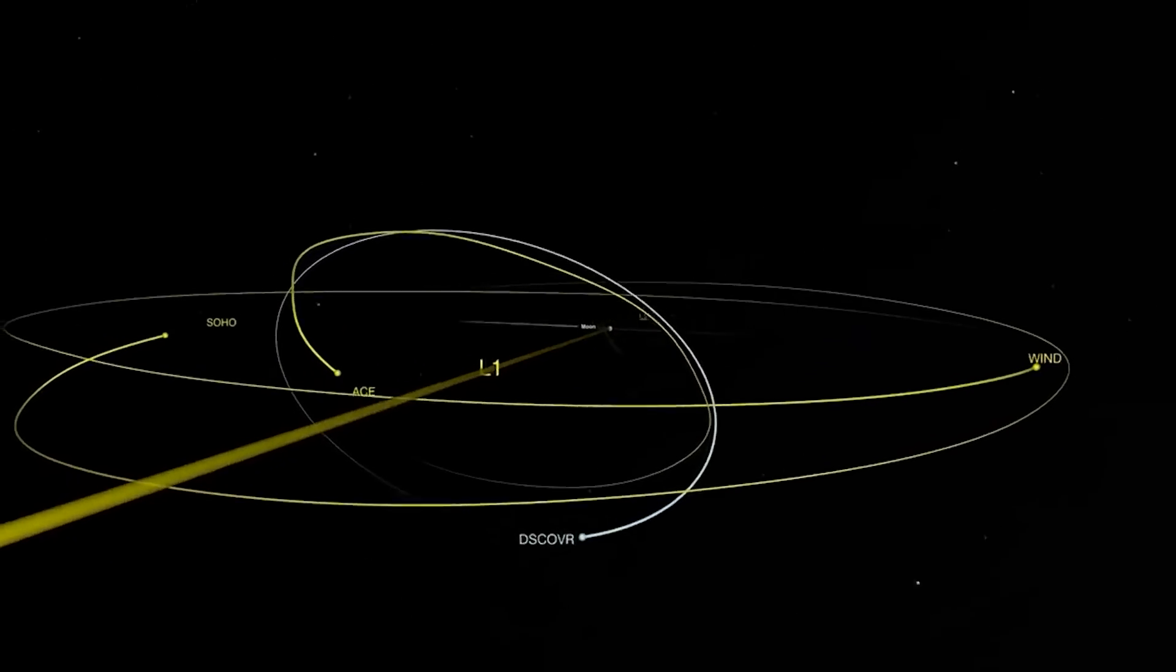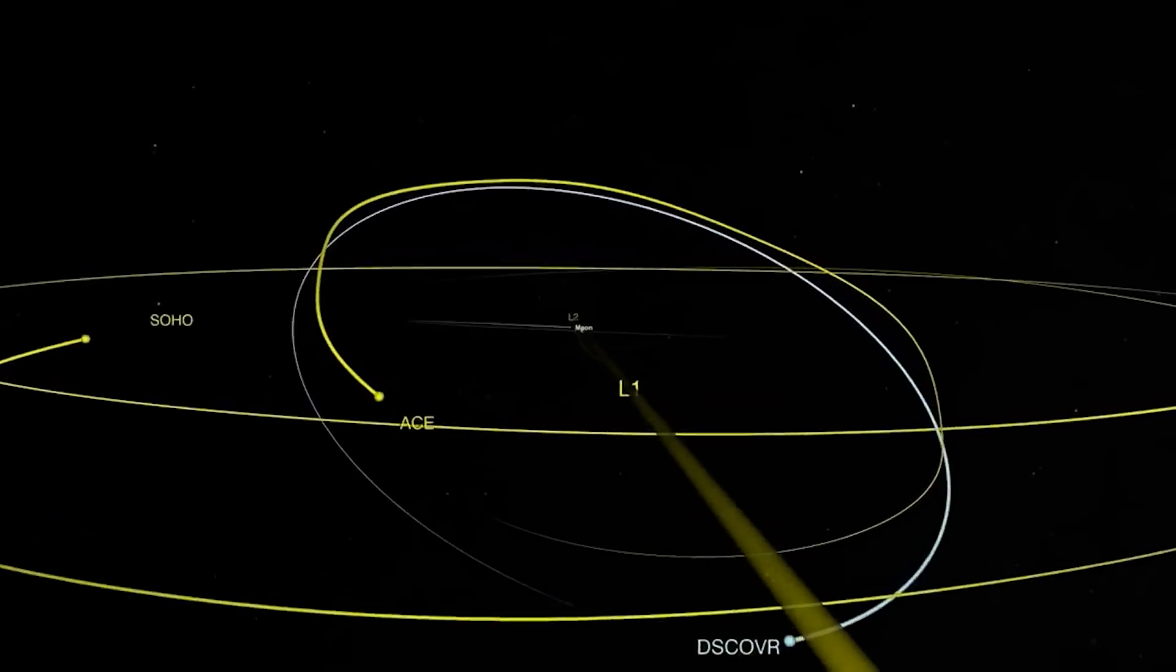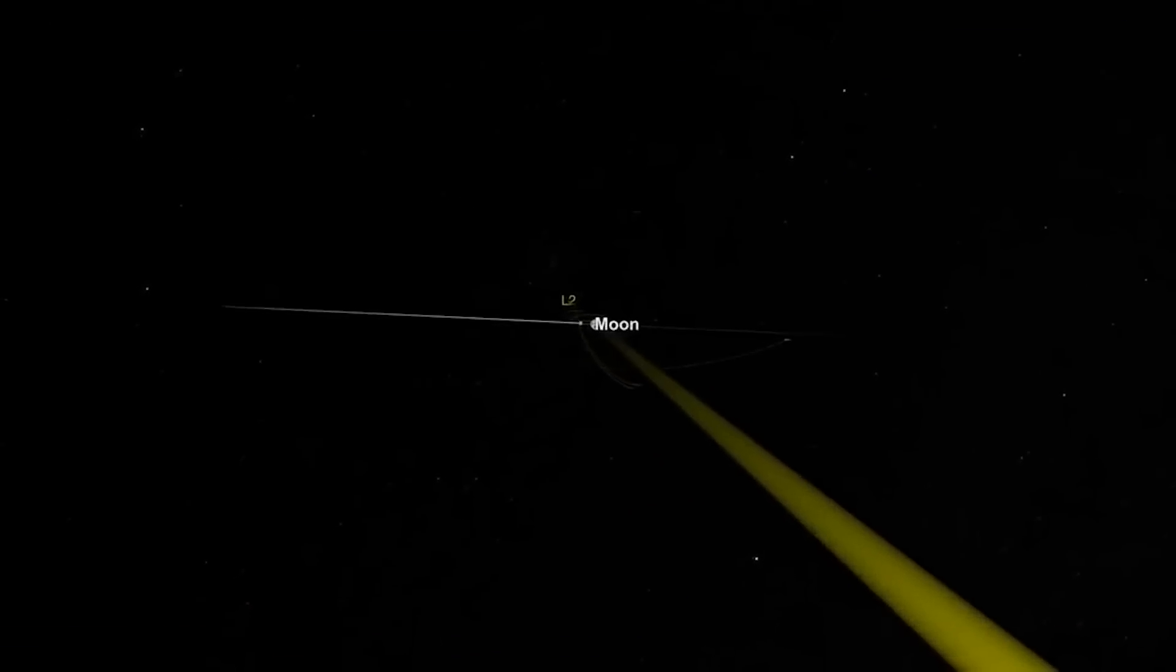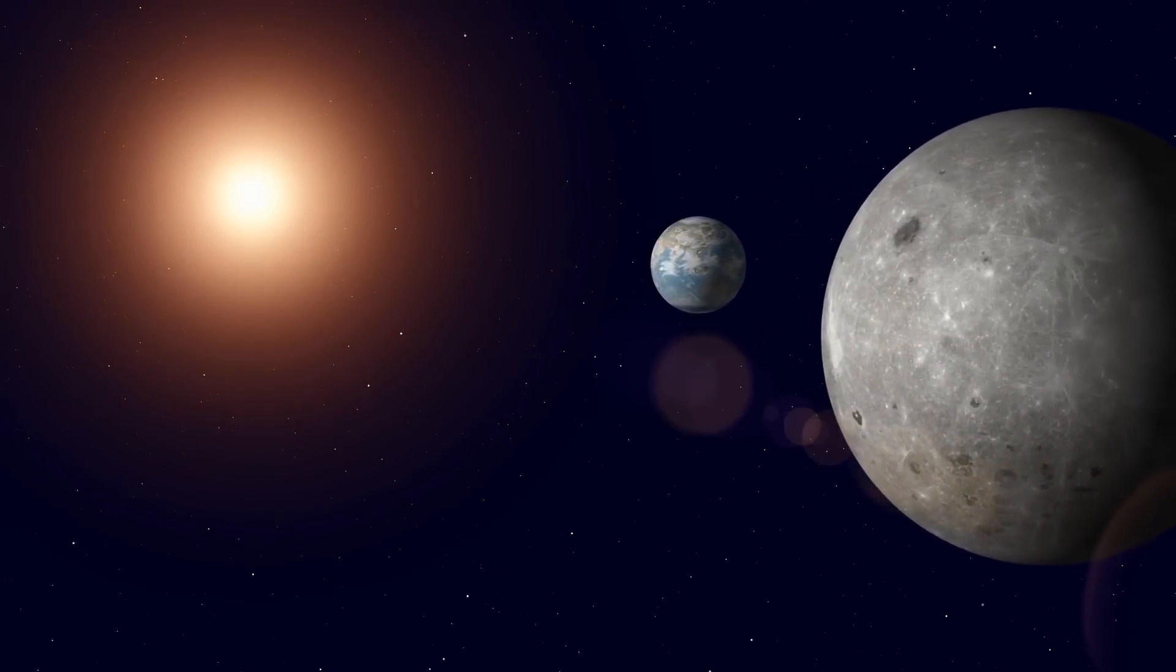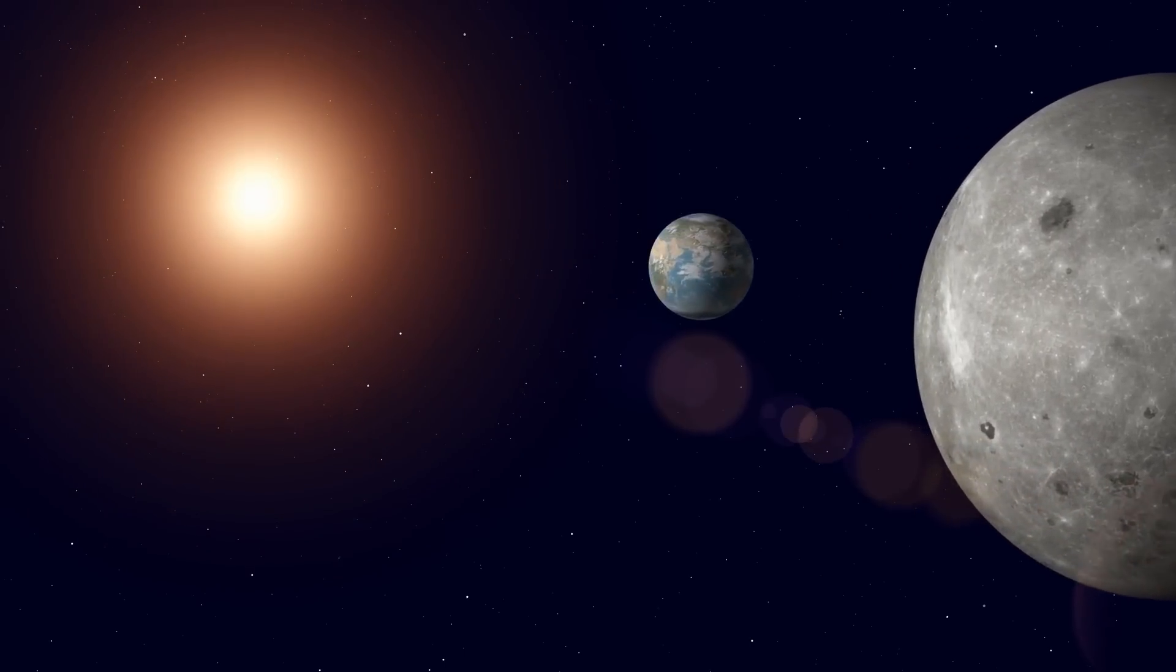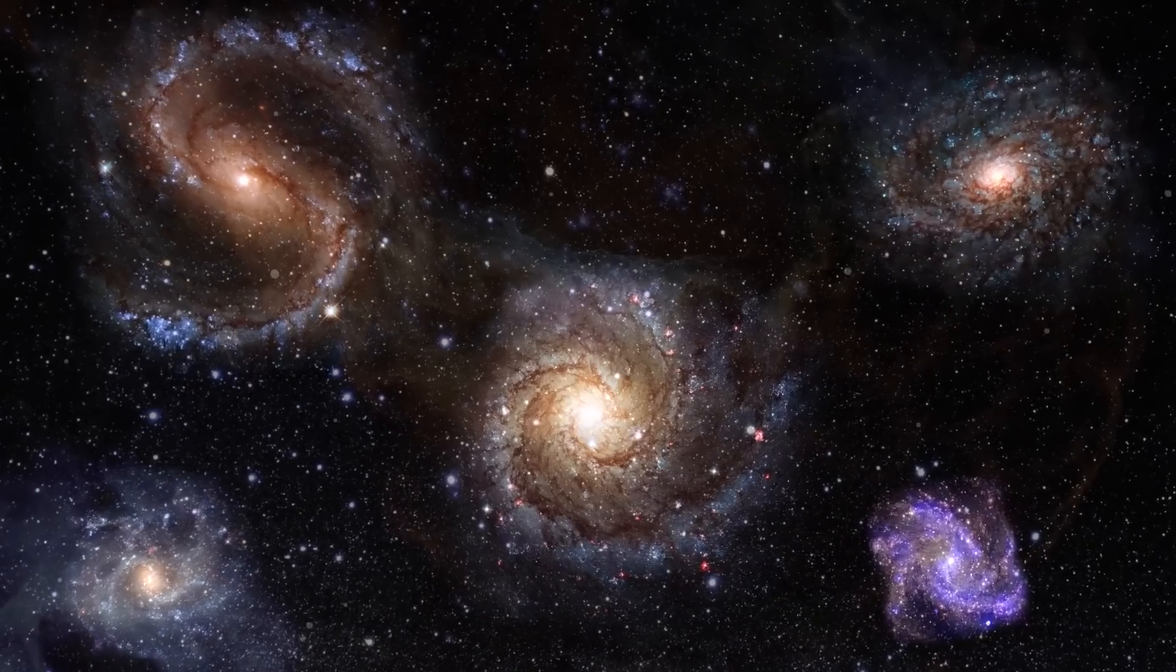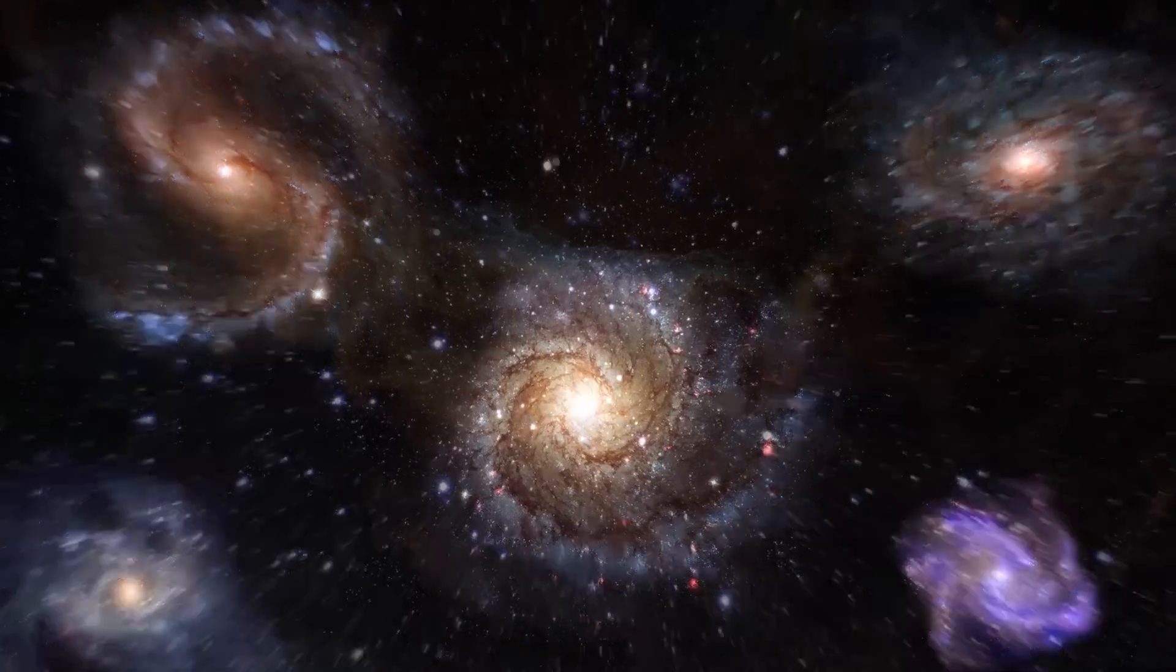He says it's like trying to balance a marble on top of an upside-down bowl. It just wouldn't work. But out there, in this halo orbit, things can stay in place while moving around the Sun and the Earth-Moon system. And if you look deep into space from that point, it seems like there's nothing there, just the vast, cold blackness of space.